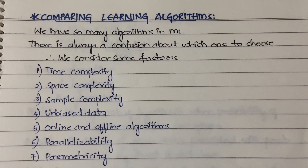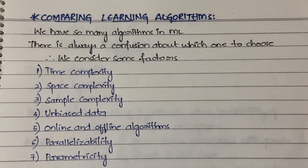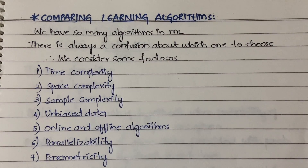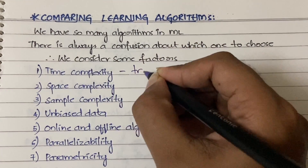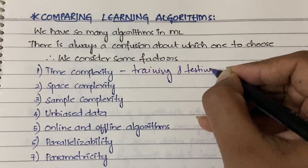Time complexity is the amount of time that an algorithm takes to complete. In time complexity we actually have two aspects — you need to check both training time complexity and testing time complexity. Training means you will be training the machine, making it learn about the data. Testing means checking whether the machine is performing well according to what it has learned. So you need to check both training and testing time complexity.